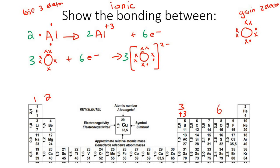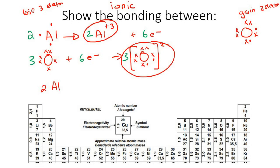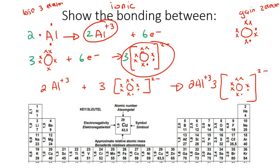Now the numbers match at six electrons each. We combine the ions: 2Al³⁺ plus 3O²⁻. Putting them together gives Al₂O₃, and your teacher might write that as Al₂O₃ in the solid phase.